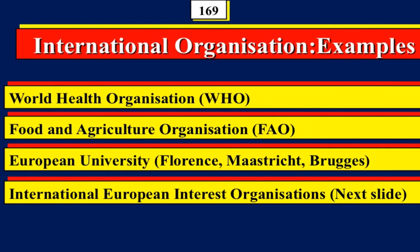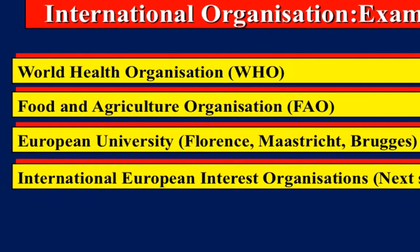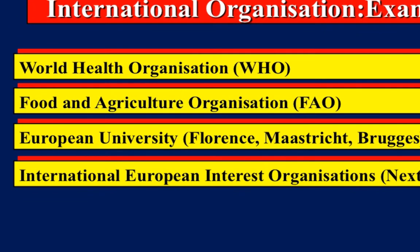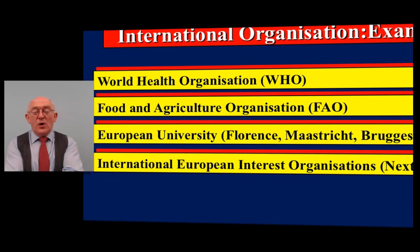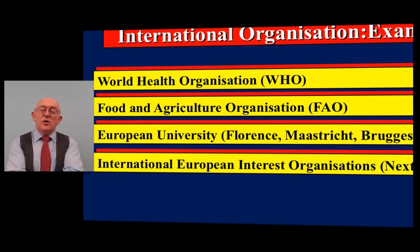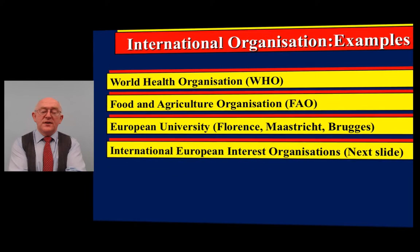Examples of international partners include the World Health Organization based in Geneva and the FAO based in Rome. The European University Institute in Florence is not an Italian university — it is part of the European institutions, the same as Maastricht and Bruges. So in theory, someone from Italy could go on a Marie Curie fellowship to the EUI because it is not classified as an Italian university.